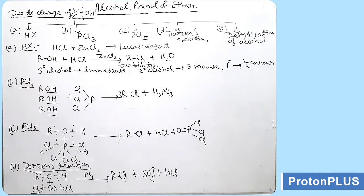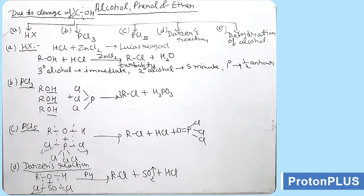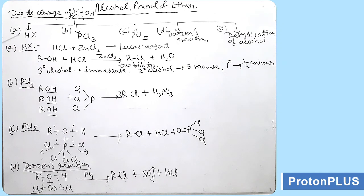Next, we will take reactions due to cleavage of the CO bond, where the carbon atom acts as an electrophilic center. The reactions we will cover are: A) reaction with hydrogen halide HX, B) with PCl3, C) with PCl5, D) Darzens reaction, and E) dehydration of alcohol, that is removal of water.